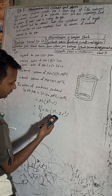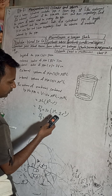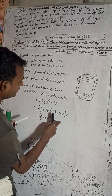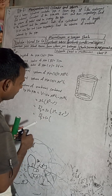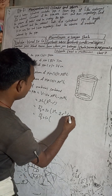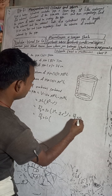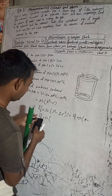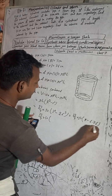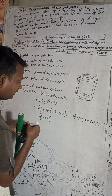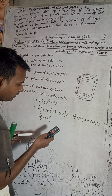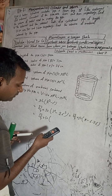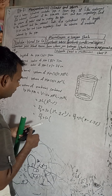2.6 squared: 2.6 times 2.6 equals 6.76. So this is 9 minus 6.76. That gives 2.24. So writing it out: 22 by 7 into 50 into (9 minus 6.76), which is 2.24.